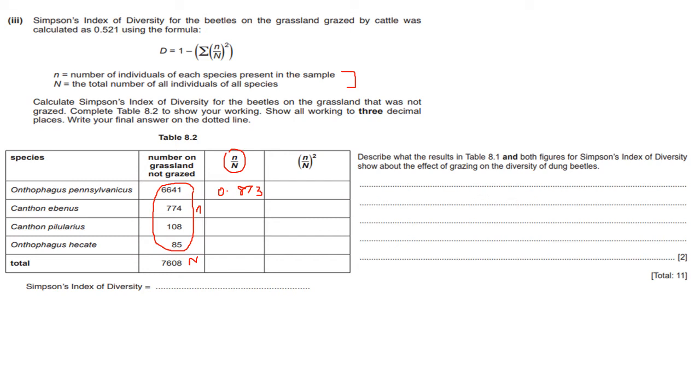And then you have 774 divided by 7,608 and I hope you're working with me as I'm doing this just so you might get a hang of it. So this is 0.102. And we can do the same over here, where it's 108 divided by 7,608 and that gives us 0.014. So over here we're just going to have 0.014. And 85, again we repeat the exact same thing divided by 7,608 and that gives you 0.011. Please note that you don't have to add the total of this over here.